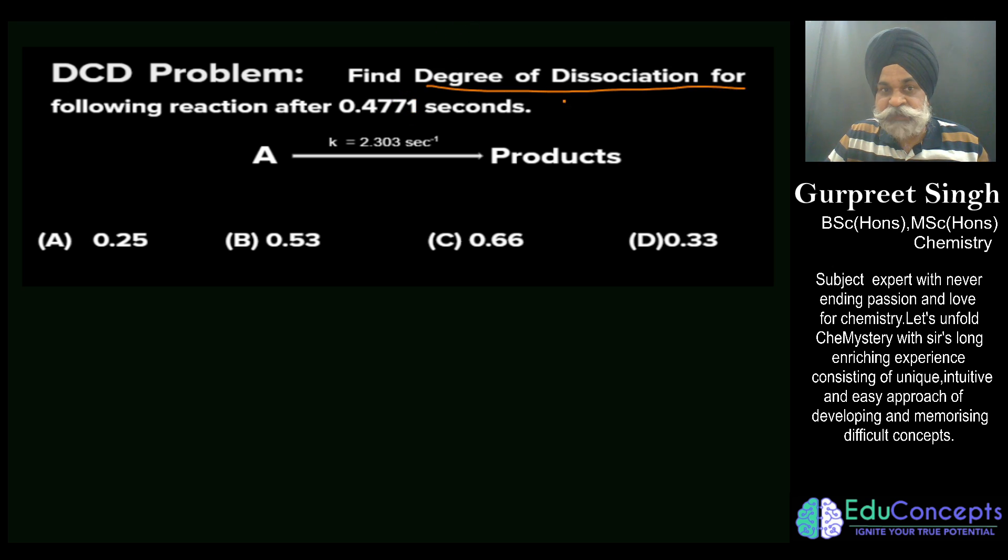Degree of dissociation is being asked for a reaction after this much of seconds and rate constant is being given to you. Since order of reaction is not clearly shown here, so we have to rely on the units of rate constant for finding out the order of reaction.